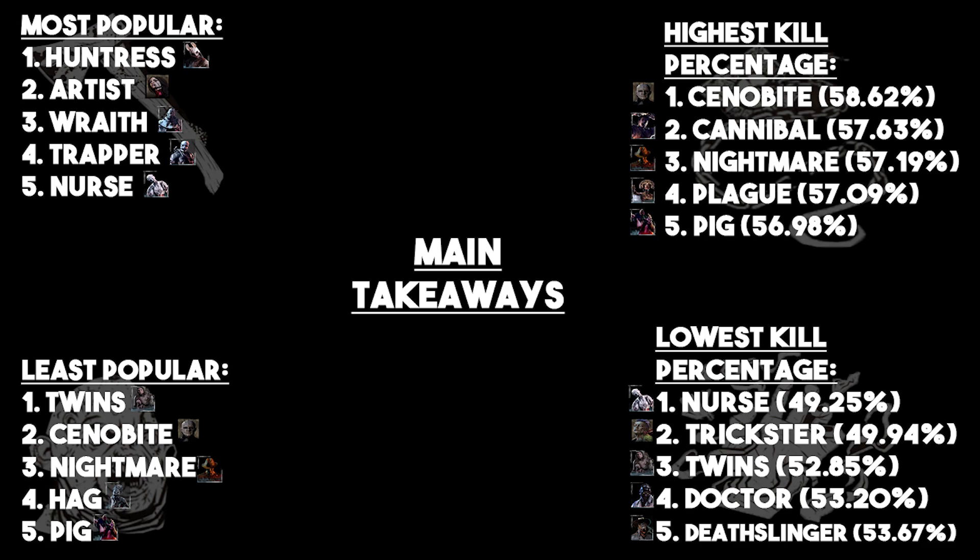Overall, most of this is pretty much how I expected it. I'm very surprised by the lack of popularity for the Cenobite, surprised by the lack of lethality for the Doctor, and definitely surprised that Pinhead is the best killer per this data — even though we know this is nowhere near how you'd make a tier list, since it considers literally everyone that plays the game, not just people who play it well. As a Clown main, I notice Clown is doing very poorly both in kills and play rate — sixth in lowest kill percentage, and only 2.87% of people are playing him.